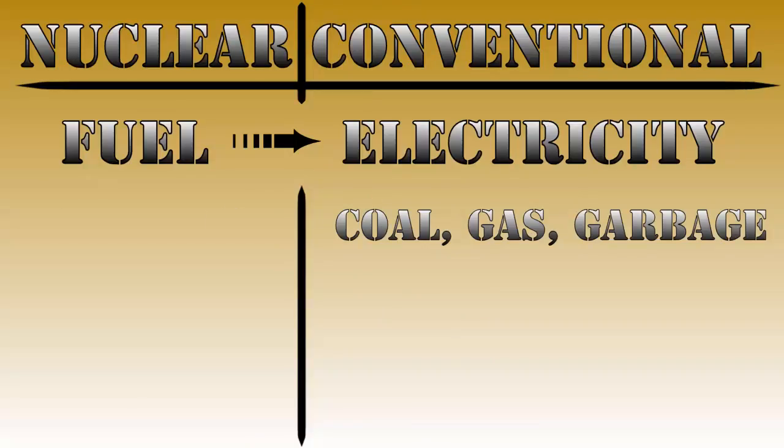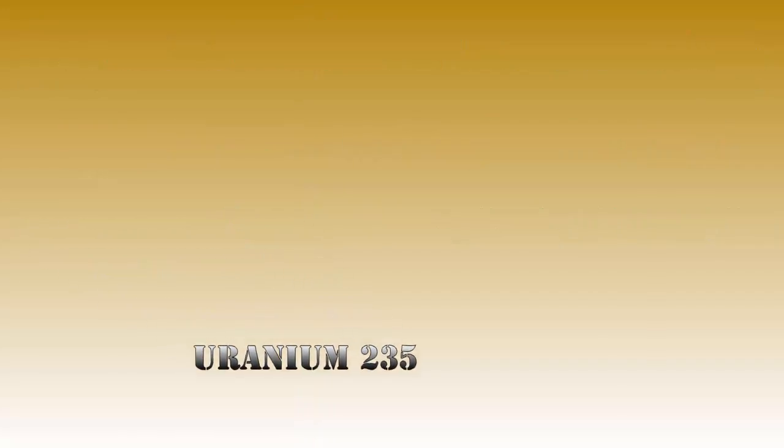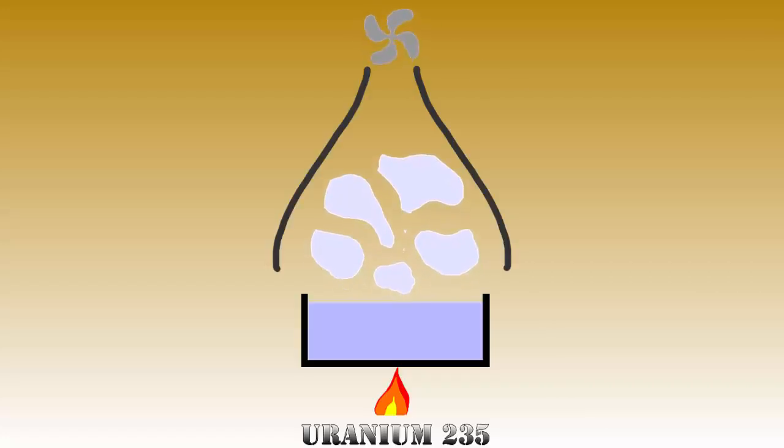Nuclear power plants use uranium-235 instead of conventional fuels, but the principle of operation is still the same. The uranium produces energy, which is used to boil water to produce steam, drives a steam turbine, which produces electricity.